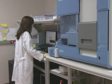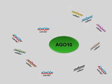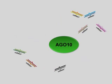We started by isolating AGO10-containing complexes and identifying AGO10-associated small RNAs. It turned out that AGO10 predominantly binds to a particular group of microRNAs — that is, microRNA 166 and 165. How does AGO10 specifically select microRNA 166 and 165 among hundreds of small RNAs?